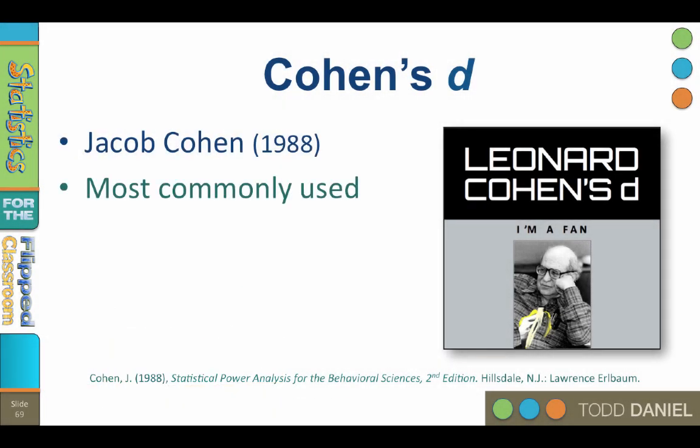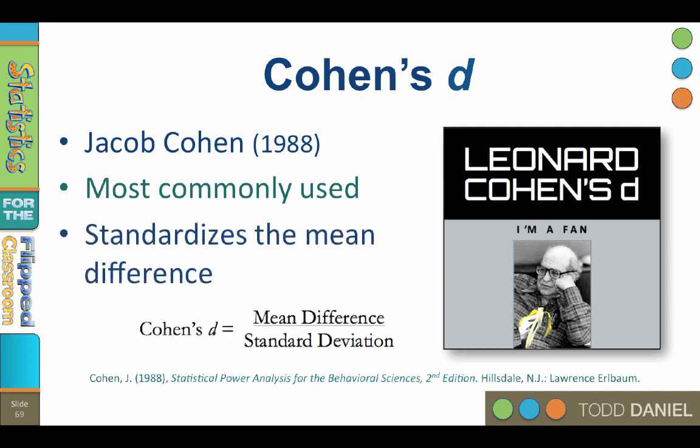Cohen's D is the most commonly used measure of effect size, and what you should report any time that you conduct a t-test. Cohen's D standardizes the mean difference, dividing the difference between the two means by a standard deviation. The way that you calculate Cohen's D will differ depending on whether you are using an independent measures or repeated measures design. I'm going to show you how to calculate both types using the SPSS output.